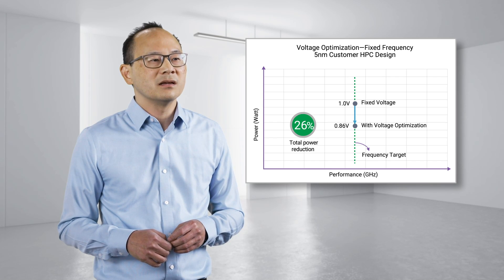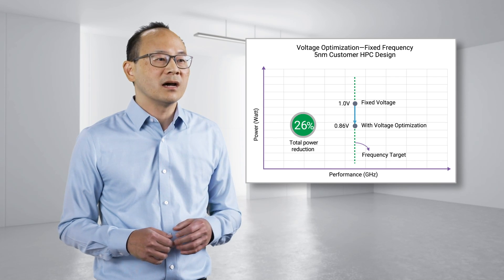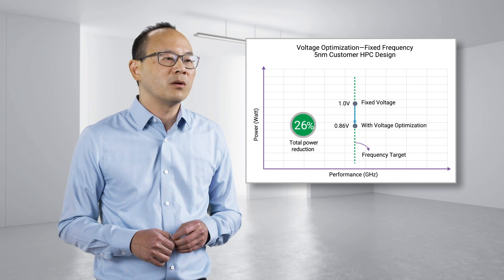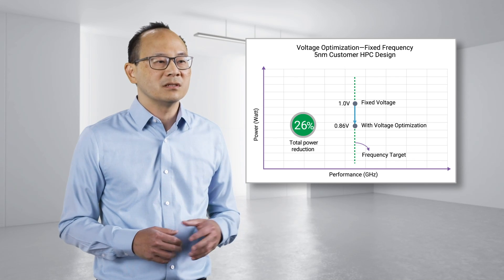In a customer case study, a 5 nanometer HPC design was able to reduce power by 26% using a 14% lower operating voltage while meeting the same frequency target.